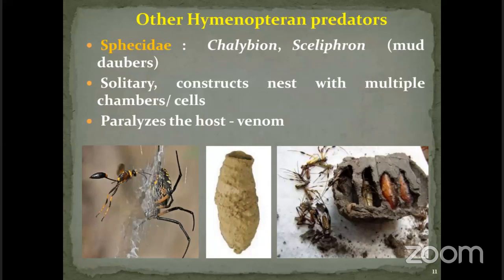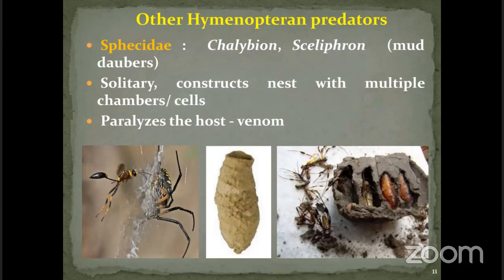Sphecidae, what we call thread-waisted wasps, include examples like mud daubers — we must have seen mud daubers that collect mud from wet soil and construct their own nests with several chambers. As seen in the images, there will be several spiders paralyzed by venom injected using the wasp's sting. The Sphecidae lays its eggs on the paralyzed spiders, the larvae develop by consuming the internal content, then pupate within the chamber, and adults emerge.